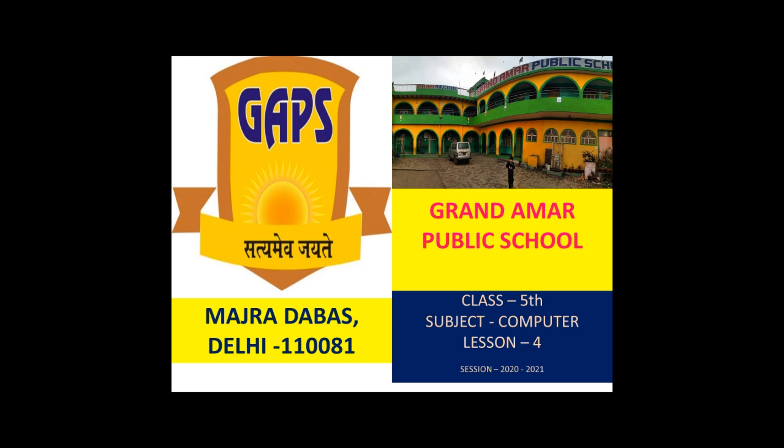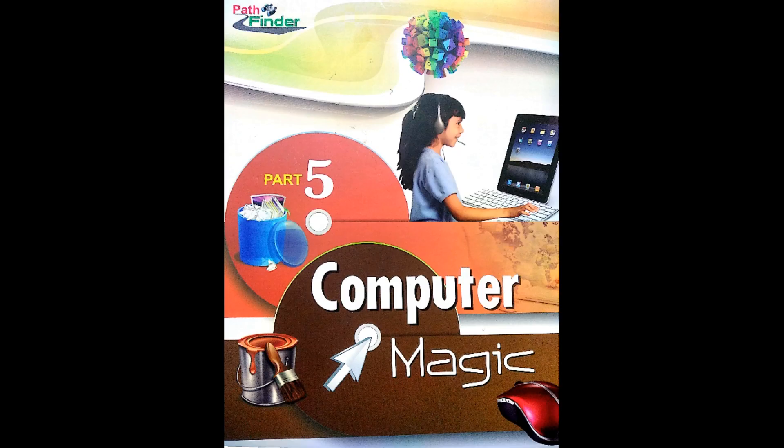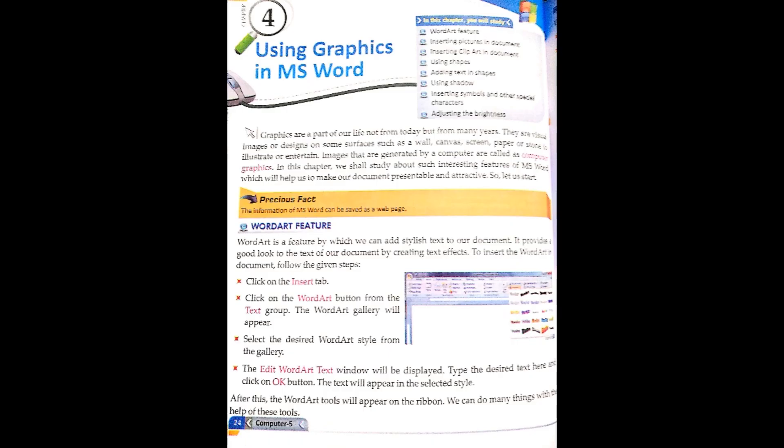Hello class, fifth class. Today I'm going to teach you computer lesson number four: using graphics in MS Word. Let's start the chapter. Graphics are a part of our life, not from today but from many years. They are visual images or designs on some surface such as a wall, canvas, screen, paper, or stone, to illustrate or entertain.